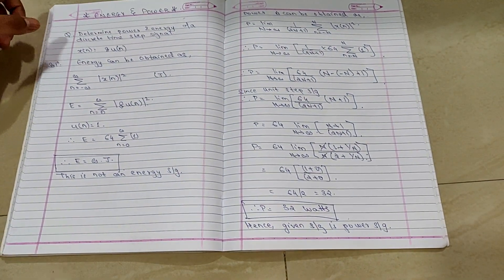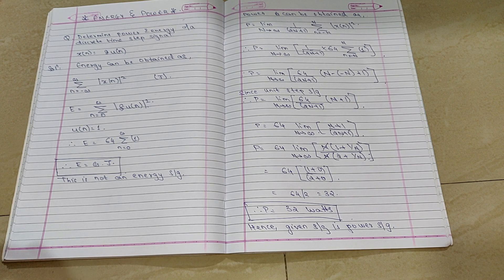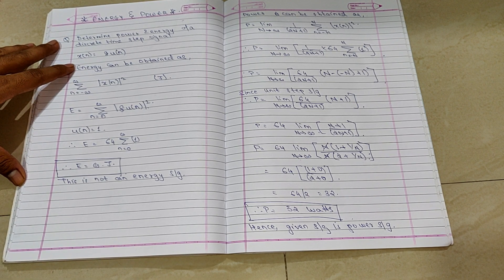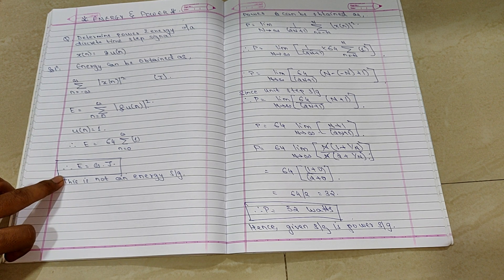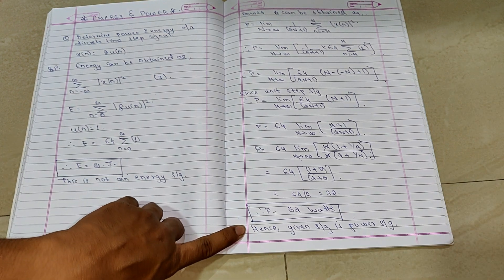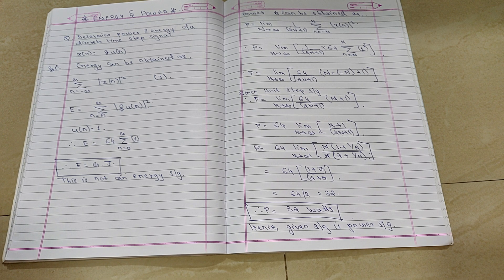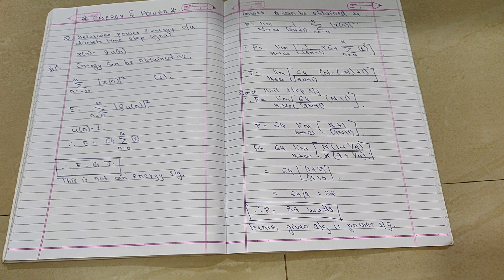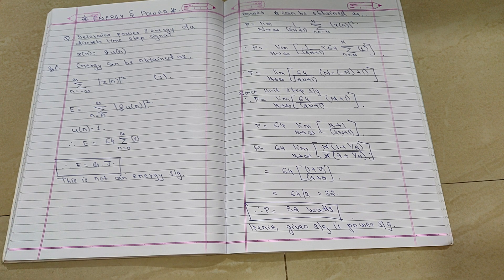Now, there are cases, like this case, this is a unique case, that's the reason I have made a video on it, where the given signal will either have only one. Like, in this case, the energy is infinite. So it is not an energy signal, it is a power signal. Now, there may be a case where the power is infinite and you get energy. So that is energy signal. And there are some signals as well, which do not have energy, neither power. So, there are signals.